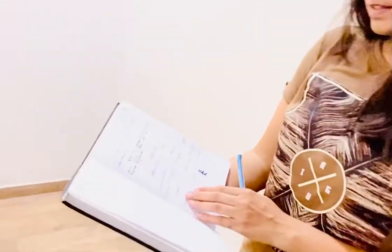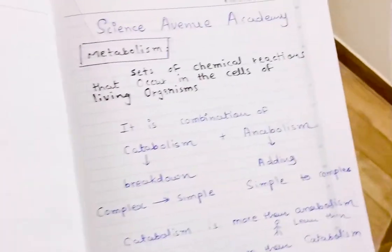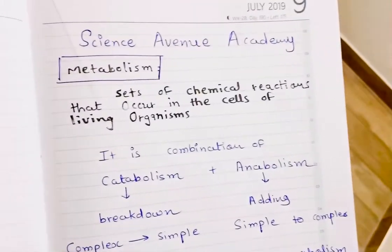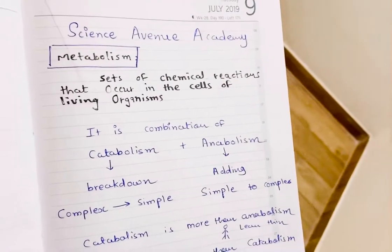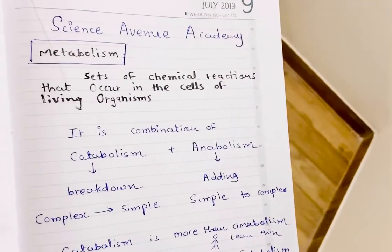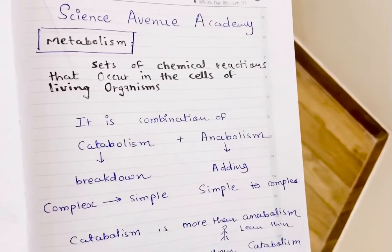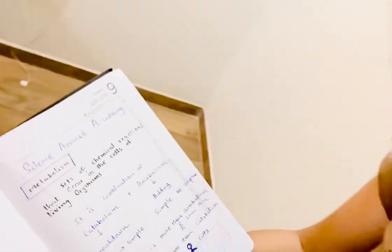If catabolism is more than anabolism, then it will be a lean and thin body. And if anabolism is more than catabolism, then the person will be fatty. The metabolism is the combination of catabolism and anabolism in the living organism in the cell.